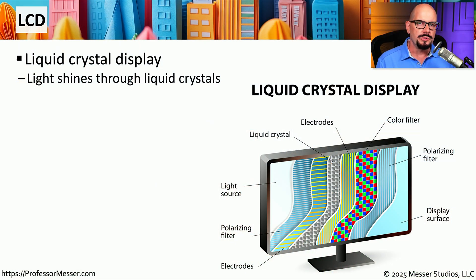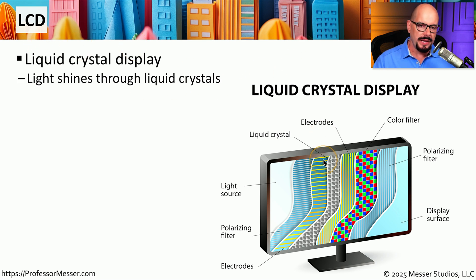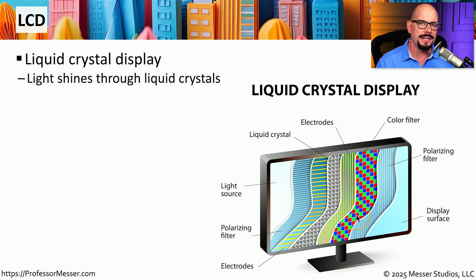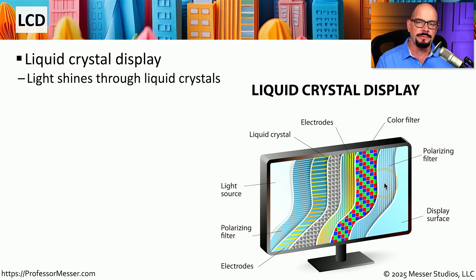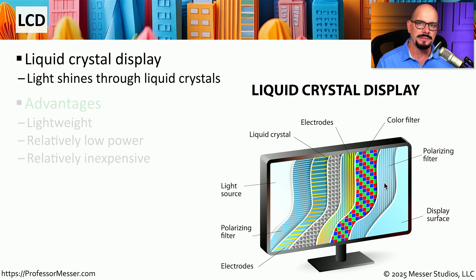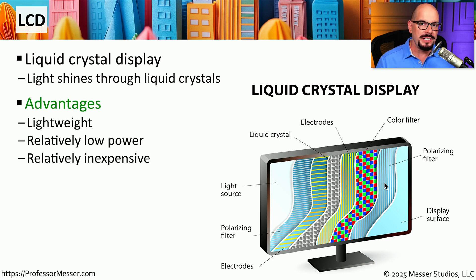Many of the monitors that we use today are LCD monitors — that stands for liquid crystal display. This is a display that has liquid crystals that light is shown through from the back, it passes through a color filter, and then finally to our eyes. This combination of light, filters, and color is how we're able to see information on these displays.